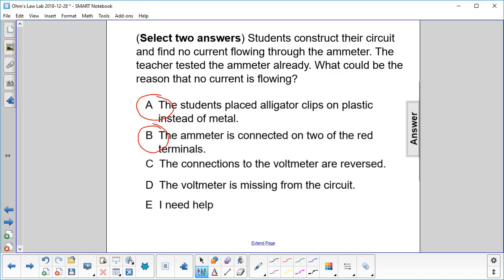The connections to the voltmeter are reversed. All that will do is give you an opposite polarity on your reading from the voltmeter if you have a digital meter or it would peg it to the left at the zero mark, but it has nothing to do with the ammeter.